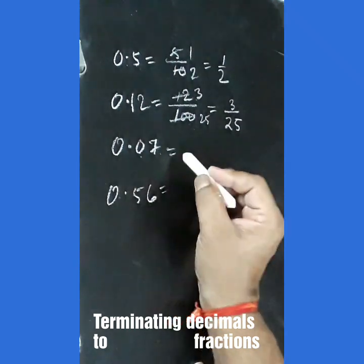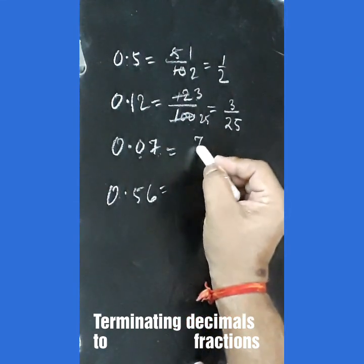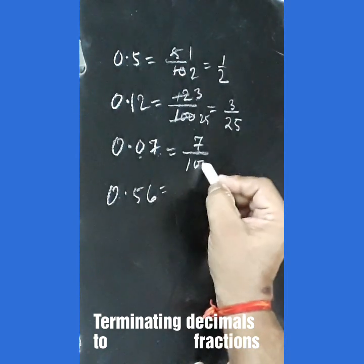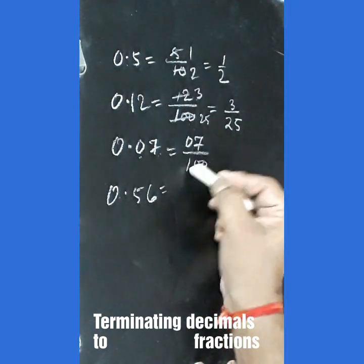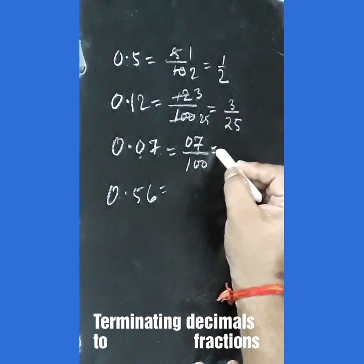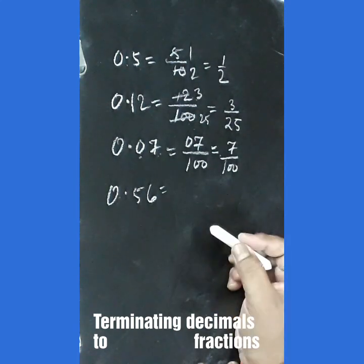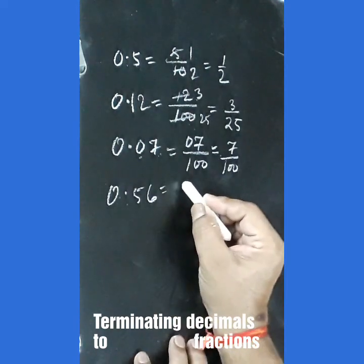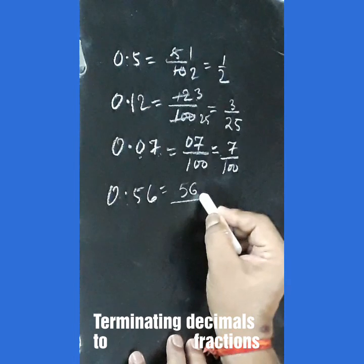For 0.07, again we have two digits after the decimal. It will be written as 7 upon 100. Now we have 0.56.